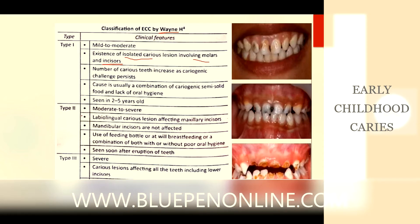To differentiate between Type 2 and Type 3: mandibular incisors will be involved in the severe form (Type 3). To differentiate between Type 1 and Type 2: in Type 1 there will be only isolated carious lesions, whereas in Type 2 there will be labiolingual lesions with multiple teeth involved.